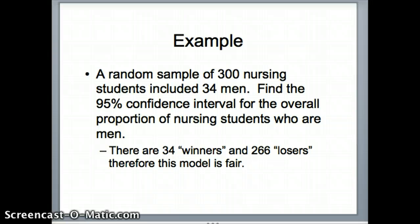Here's an example. A random sample of 300 nursing students includes 34 men. We want to find the 95% confidence interval for the overall proportion of nursing students who are men. These are 300 nursing students, a random sample, simple random sample we hope, where every person in the population has an equally likely chance of being selected. We have 34 out of 300. Our proportion of interest, our p-hat, is 34 divided by 300.